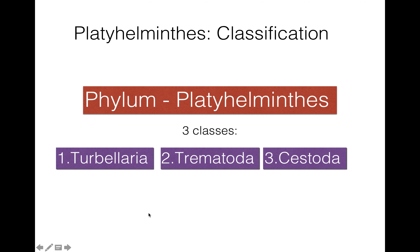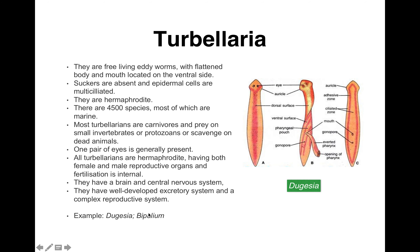These are some general characteristics of Platyhelminthes. Platyhelminthes comprises three classes: first is Turbellaria, second is Trematoda, and third is Cestoda. The first is Turbellaria — an example is Dugesia, commonly known as Planaria.